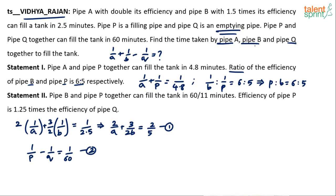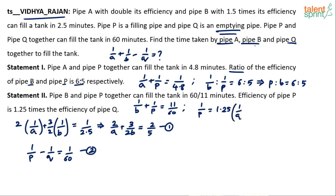Statement 2: Pipe B and pipe P together can fill the tank in 60/11 minutes, giving: 1/b + 1/p = 11/60. That's Equation 5. Also, efficiency of P is 1.25 times efficiency of Q, so 1/p = (5/4) × (1/q), which gives 4q = 5p. That's Equation 6. Statement 2 also provides two more equations.